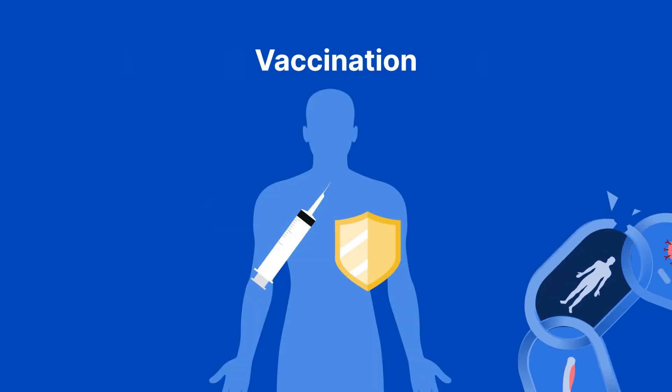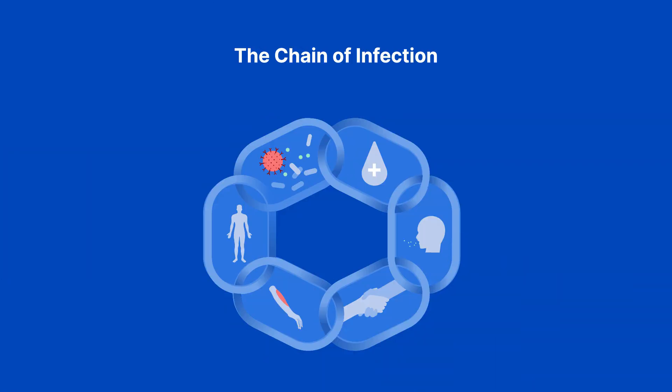Vaccination is a powerful tool to protect the susceptible host. It creates immunity like a shield against infectious agents — think of it as a defense mechanism that safeguards against diseases like measles. Understanding the chain of infection is pivotal for healthcare professionals, as it's the foundation for effective infection control, protecting both patients and healthcare workers.